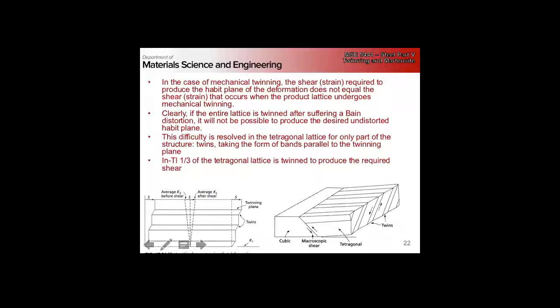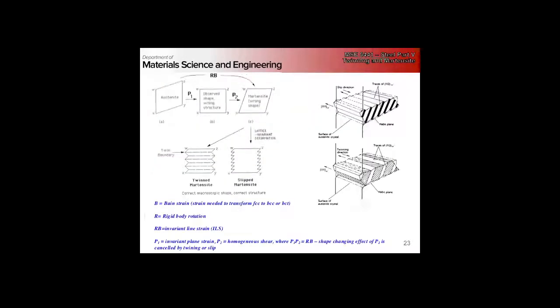For the indium-thallium system, we need one-third twins of opposite variants. A schematic shows the FCC structure transforming to BCT, with our twins accommodating the shape change. The three parts of the transformation are the Bain strain, a rigid body rotation, and a lattice-invariant shear — either twinning or slip.